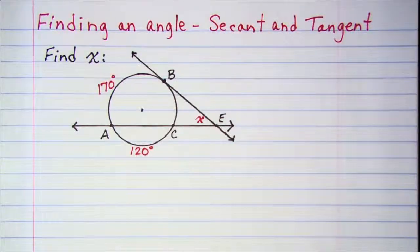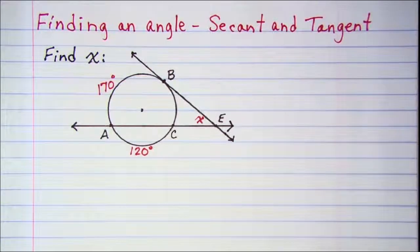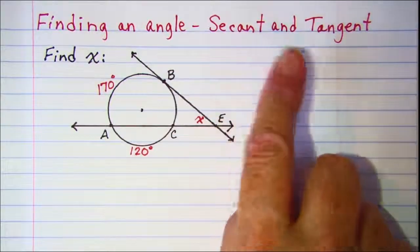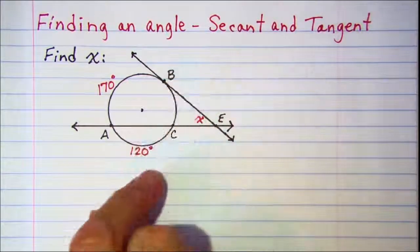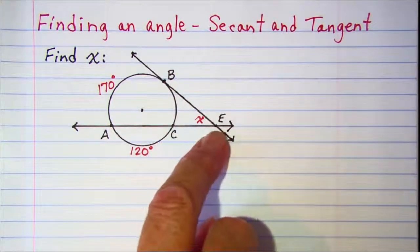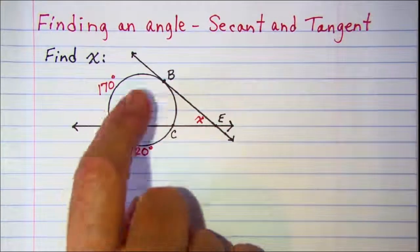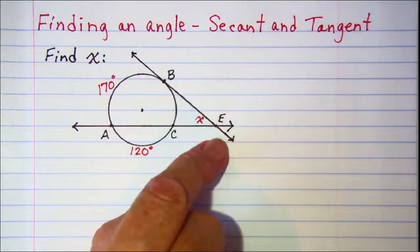In this video we'll be finding the measure of an angle formed when a secant and a tangent intersect. Here we have our circle. Secant AC is shown here and tangent BE is shown here.